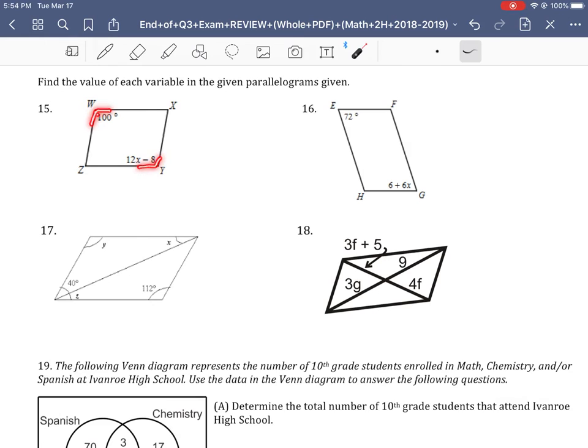They're both nice little obtuse angles and they are equivalent, so we just set them equal to each other. We say 100 would be equal to 12x minus 8. Once you set it equal, then you can solve. We just isolate the variable. We add 8 to this side and get 108 equals 12x. If we want x by itself, we divide by 12 and we end up getting x is equal to 9.